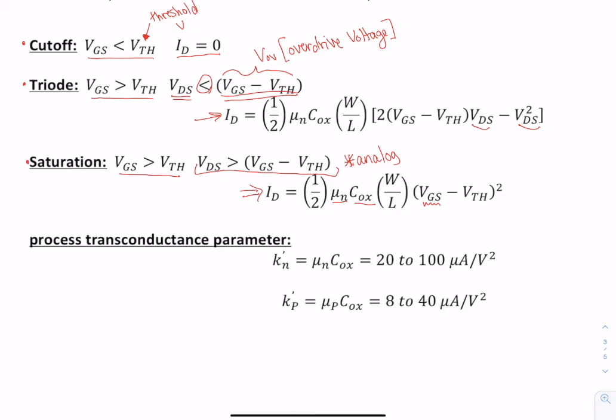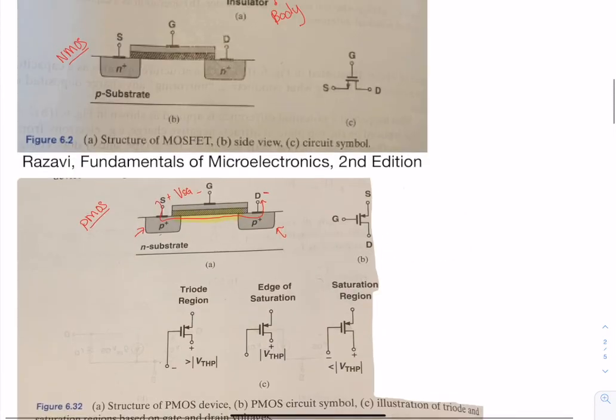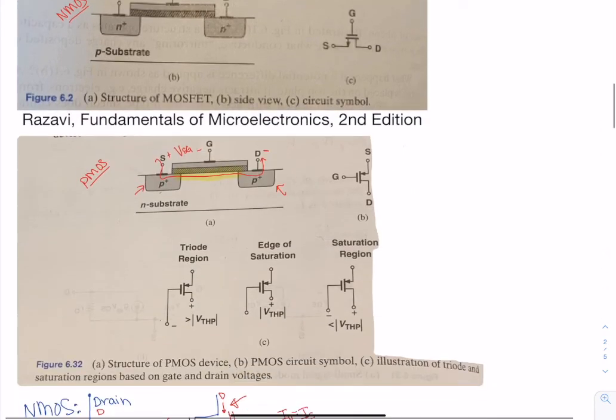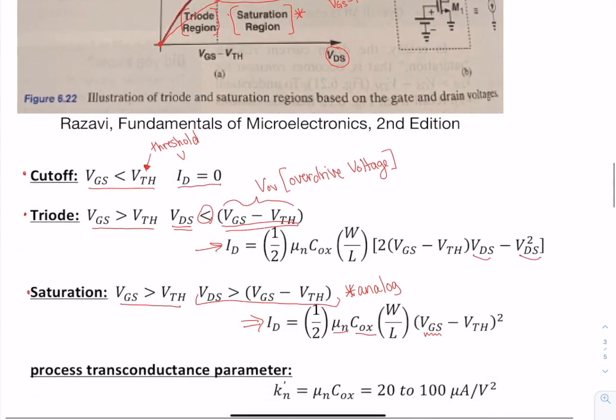W is the width of your transistor. And L is the length. So this is L. And W is the dimension here. So W and L depend on the layout of your transistor.